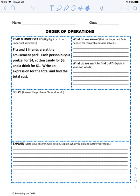So we know there's Fitz and three friends, so that means there are four people. We know each person buys a pretzel for $4, cotton candy for $3, and a drink for $1. So we know there are four people and we know what each person buys. We want to find out the total.